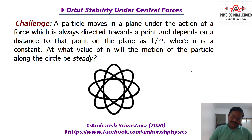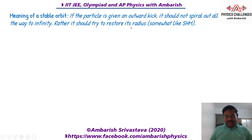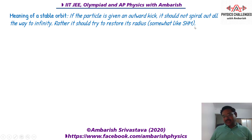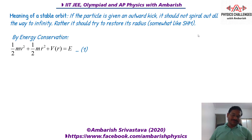Let's get to the solution. What is the meaning of a stable orbit? If the particle is given an outward kick, it should not spiral out all the way to infinity. Rather, it should try to restore its radius — if the radius is becoming bigger, it should have a tendency to make it smaller, somewhat like simple harmonic motion. Similarly, if given an inward kick, it should not spiral all the way inwards. That's the meaning of a stable orbit.